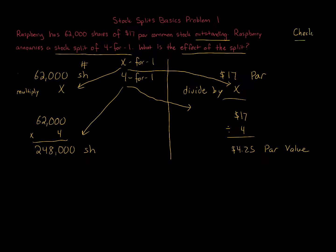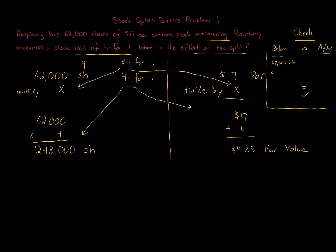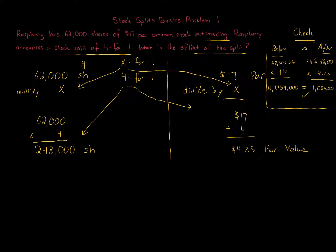You can always check your work by calculating the total before and after. Before: 62,000 shares times $17 par = $1,054,000. After: 248,000 shares times $4.25 par = $1,054,000. They equal each other, so you've done it properly.